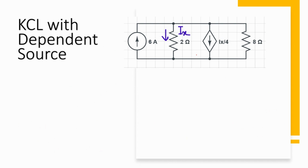Now let's look at an example of KCL with a dependent source. We can identify an independent current source and a dependent current source, represented with a diamond and arrow. The value written next to it is ix divided by 4, meaning the current from the dependent current source is controlled by the current ix flowing through the 2-ohm element. This is therefore a current controlled current source.